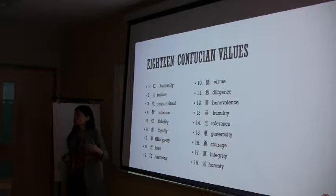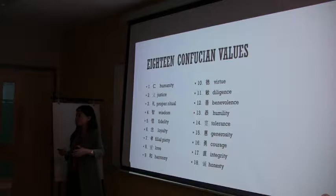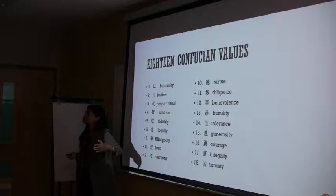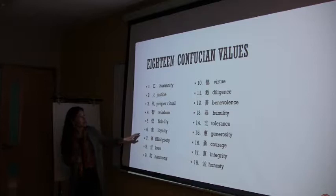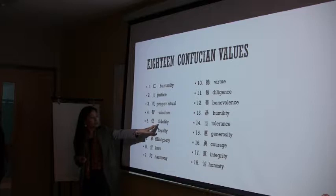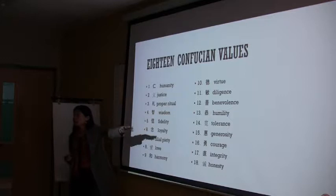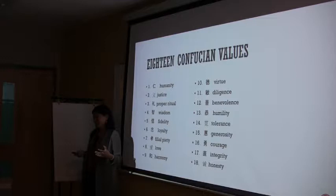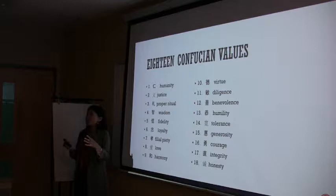This morning, when I was going through my PPT and looking through these 18 values, I thought of one Bible verse. In Corinthians 13:13, there is a verse about love, faith, and hope. In Chinese: 如今长存的有信有望有爱. We can compare the biblical values with the 18 Confucian values. We have 信 — Professor Yan Li translated it as 'faith.' We have love. But in the Confucian values, we don't have much about hope.